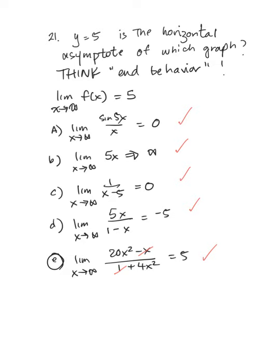In number 21, we're asked which equation has y equals 5 as a horizontal asymptote. We need to think about end behavior — taking the limit as x approaches infinity and wanting it to equal 5. The first choice goes to 0. Choice B, 5x, goes to infinity. Choice C, 1 over x minus 5, goes to 0 — the 5 becomes insignificant. Choice D, 5x over 1 minus x, gives negative 5. So our answer is choice E — the 1 and the negative x become insignificant, simplifying to a horizontal asymptote of 5.